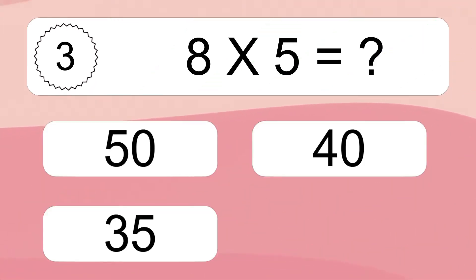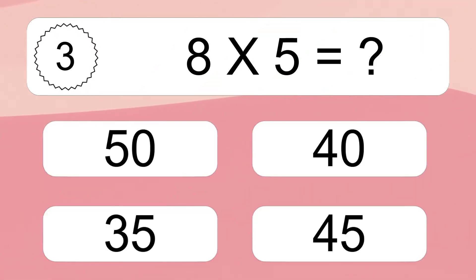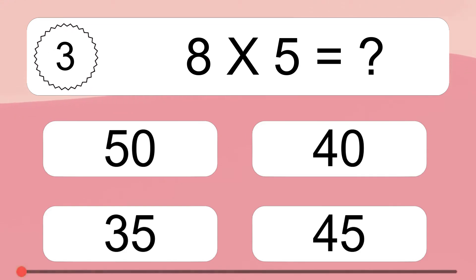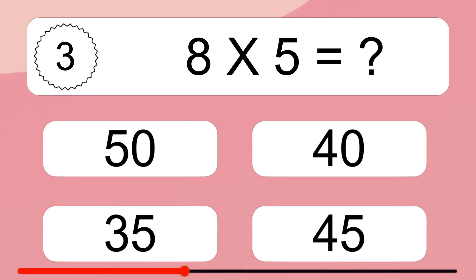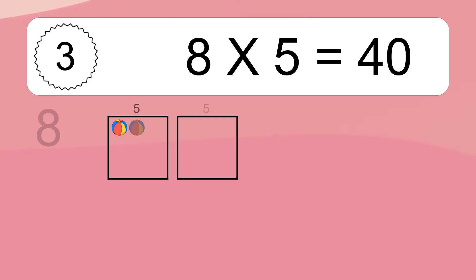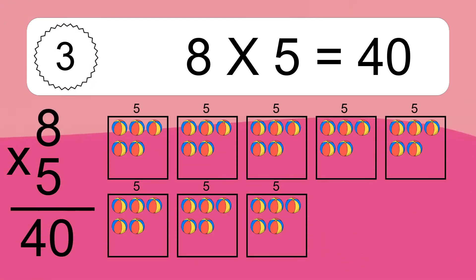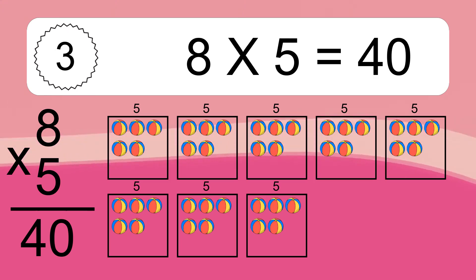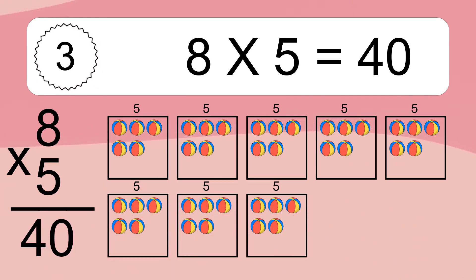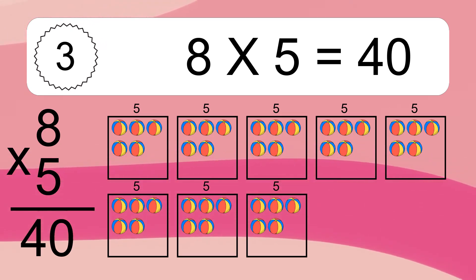8 times 5 equals what? 8 times 5 equals 40. We have 8 boxes, and each box has 5 colorful balls inside. If you count all the balls in all the boxes together, you will have 8 times 5 balls. This equals 40 balls.